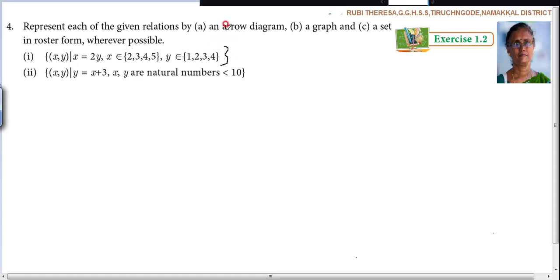They have asked for arrow diagram, graph, and set in roster form. So first you have to find out. In the place of X, what you have to do? 2Y. So the ordered pair, how you have to write is 2Y, comma Y. Actually, your ordered pair should be like this only.